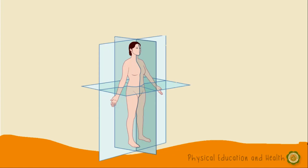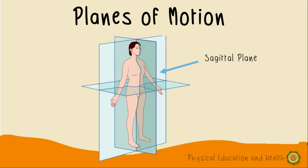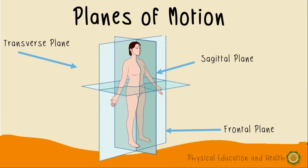Our body is three-dimensional, and imagine that we are divided and sliced into halves. We cannot move in one proportion — kasi kung one proportion lang, hindi natin magagalaw yung kamay natin papalayo, sa harap, o sa likod. Kaya may tinatawag tayong planes of motion. There are three planes of motion: sagittal plane, frontal plane, and transverse plane.